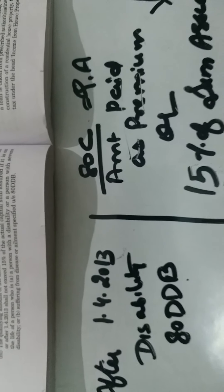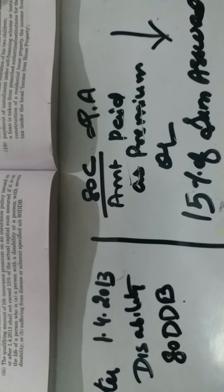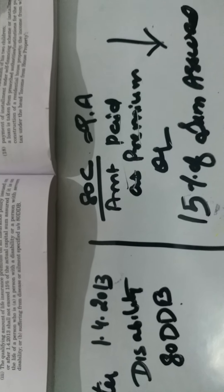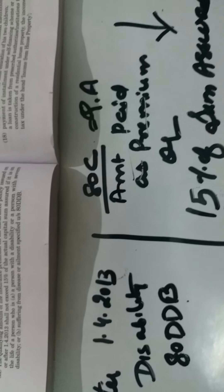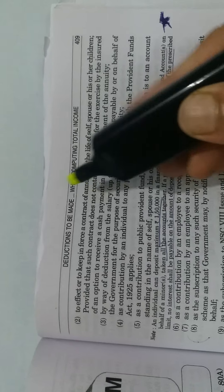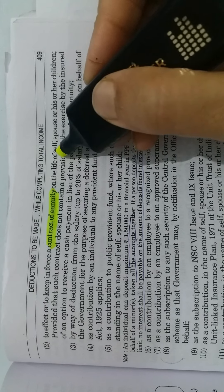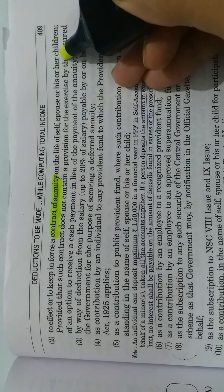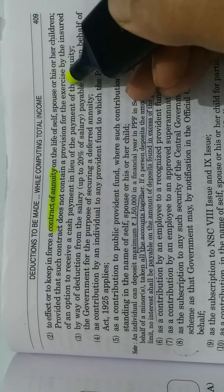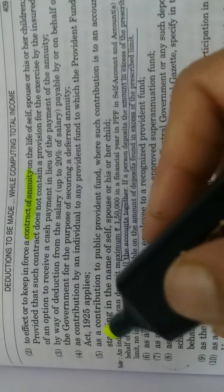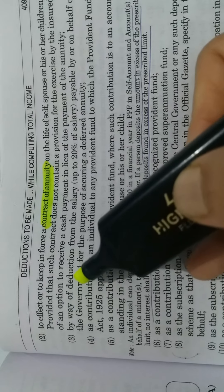You need to revise this table and remember these percentages. Next, a contract of annuity is also eligible under Section 80C. The annuity contract should be on the life of self, spouse, or children.